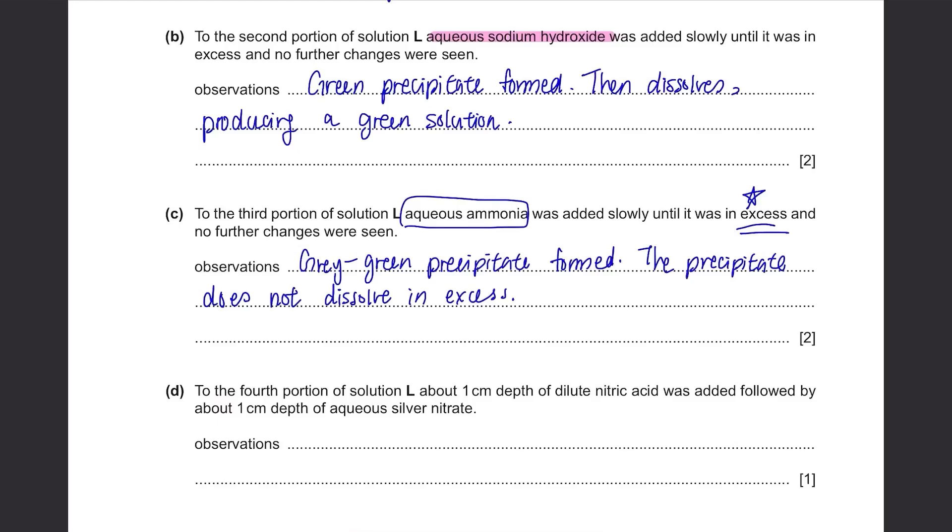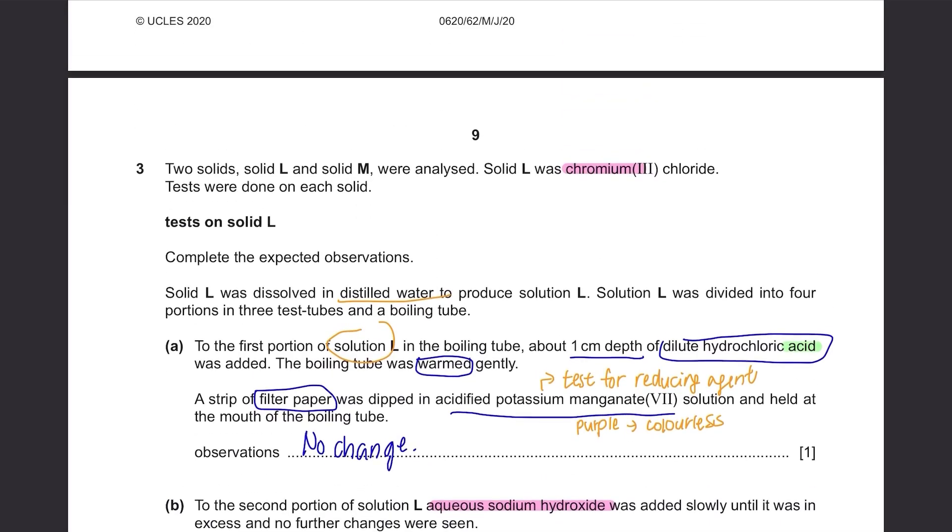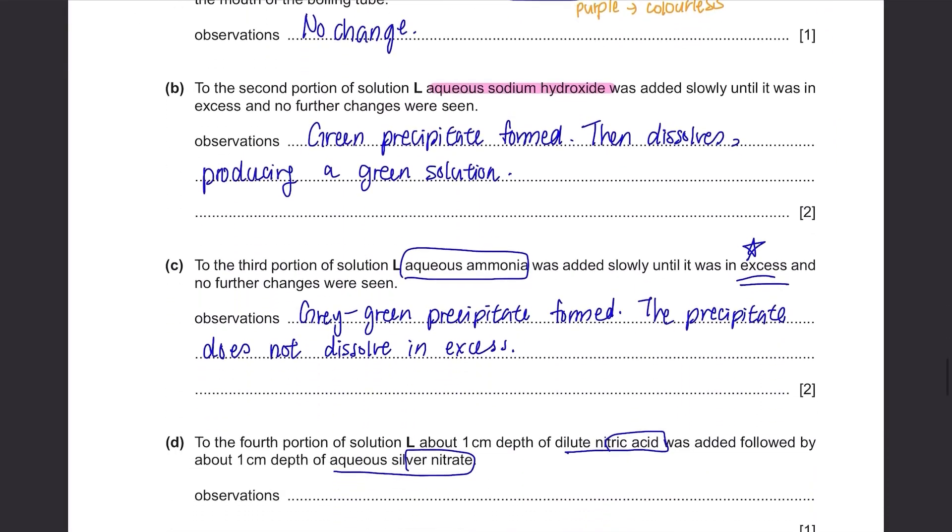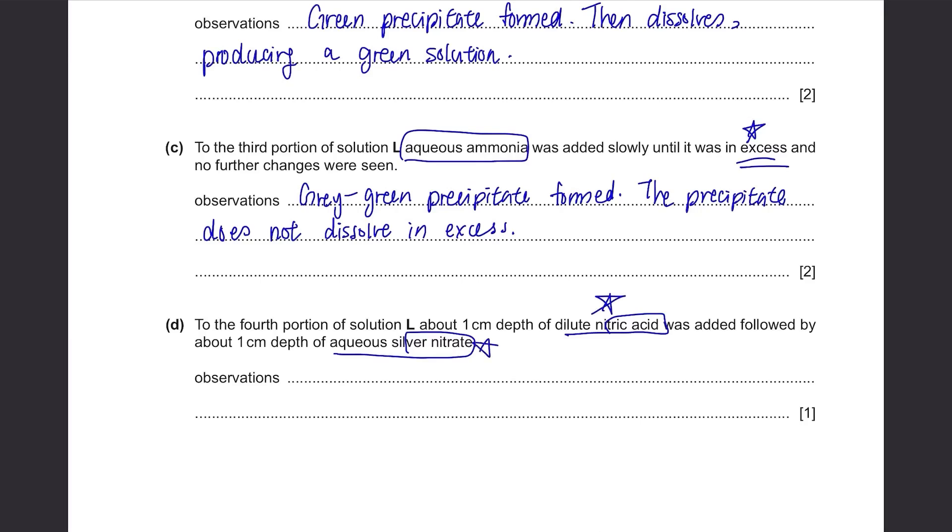Part D: To the fourth portion of solution L, about 1 cm depth of dilute nitric acid was added followed by about 1 cm depth of aqueous silver nitrate. This time, it's not related to chromium(III) ion but instead it's related to chloride ions. So chloride ion is a halide and this adding nitric acid and silver nitrate, this is a famous test to test for the presence of halides and in the presence of chloride, white precipitate will be formed. So the answer is white precipitate is formed.